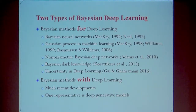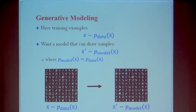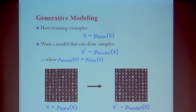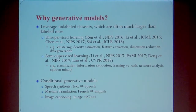One particularly popular example is called a deep generative model. This is different from supervised learning. In a generative model, the goal is that we have some sample data from an unknown data distribution and we want to learn a model to approximate that data distribution. Then we can do generalization — we can draw new samples from the model distribution. This is useful because in machine learning we have unsupervised learning tasks. We can learn completely from unlabeled data. Related tasks include clustering, density estimation, feature extraction, or dimensionality reduction.